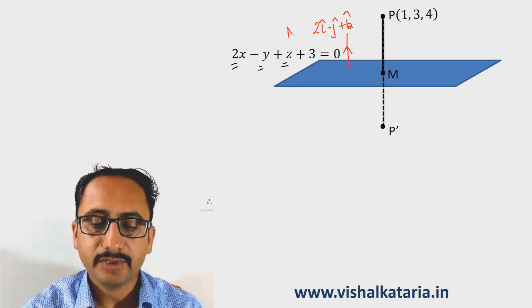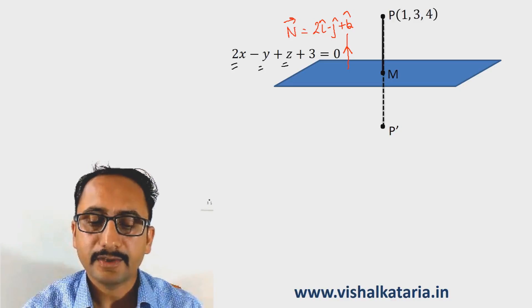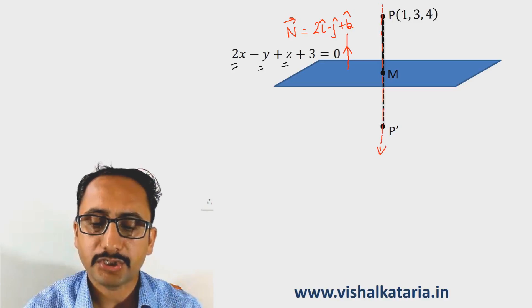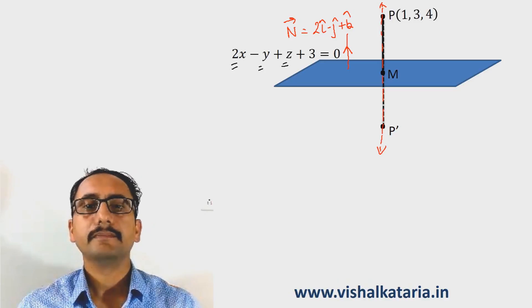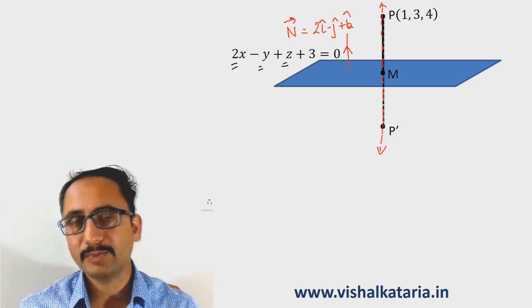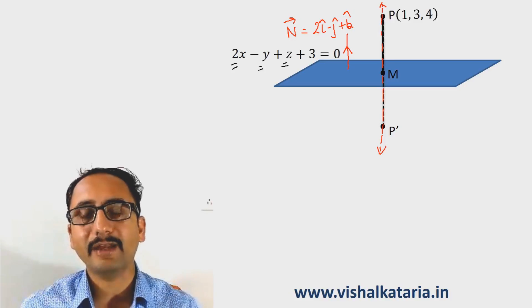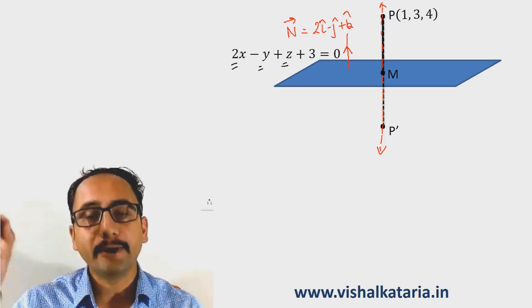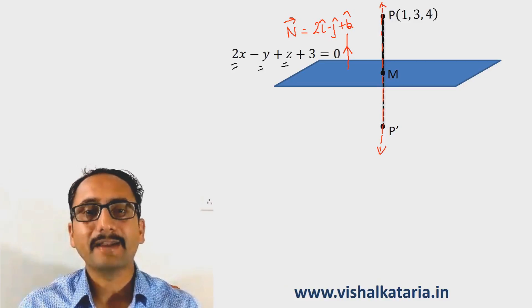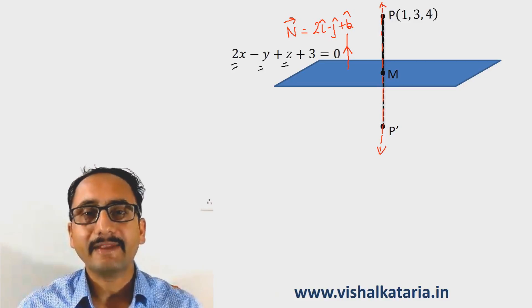This normal to the plane is parallel to the line passing through P. We can easily find the equation of the line passing through P because to find the equation of a line, we need a point on the line and a parallel vector. In this case, the parallel vector is the normal to the plane.